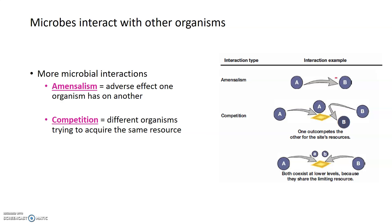There are several other interactions that microbes can have with organisms, one being amensalism, where one organism has a negative effect on another. It's not derived from coexistence and is usually an indirect or secondary effect. One example would be one gut microbe, B, being affected by another gut microbe, A, secreting an antibiotic that happens to affect B because they're living within the same gut together.